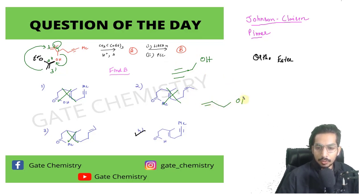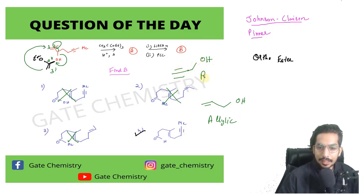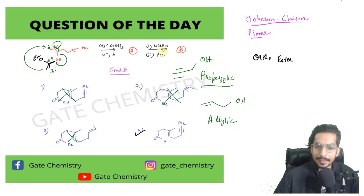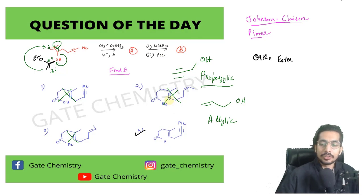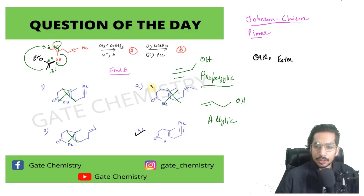Just as we call an alcohol adjacent to a double bond an allylic alcohol, when a triple bond is adjacent to an alcohol, that compound is called a propargylic alcohol. When LiAlH4 is added to a propargylic alcohol, it can reduce the triple bond. This topic has been asked for two marks in the GATE and NET examinations — do look up the mechanism, or I will frame a question of the day on it.